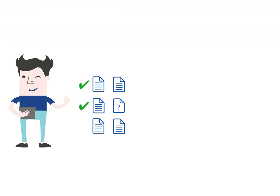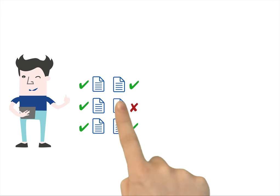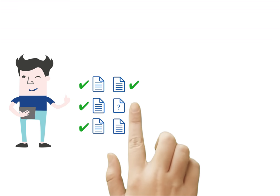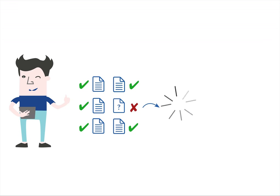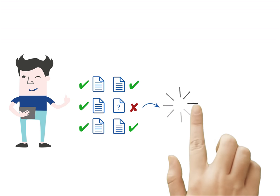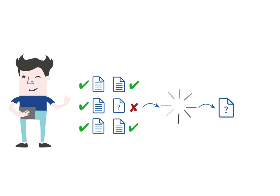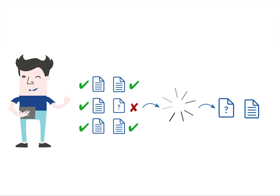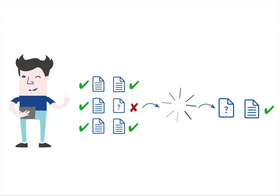Dante compares the formats contained in his dataset with a list of preferred and accepted formats. He only finds three formats he has to convert. While he is at it, he decides he might as well submit preferred formats only, so he makes some further format conversions.